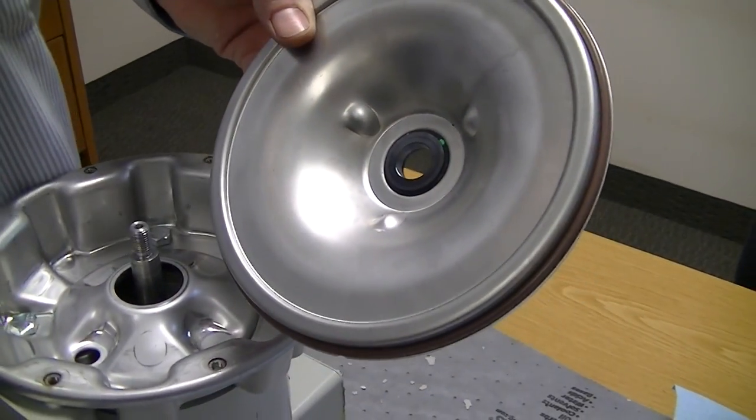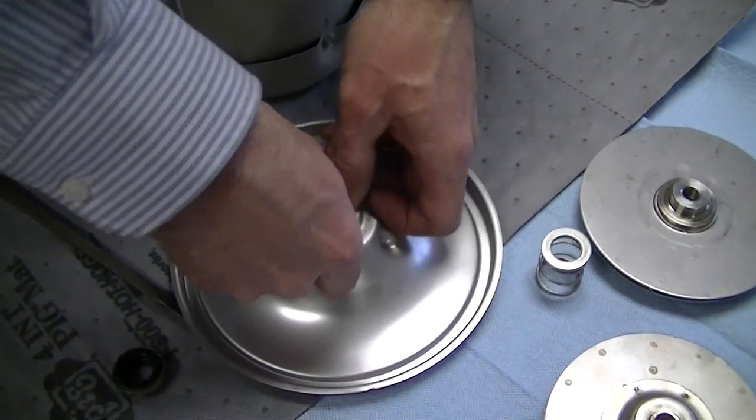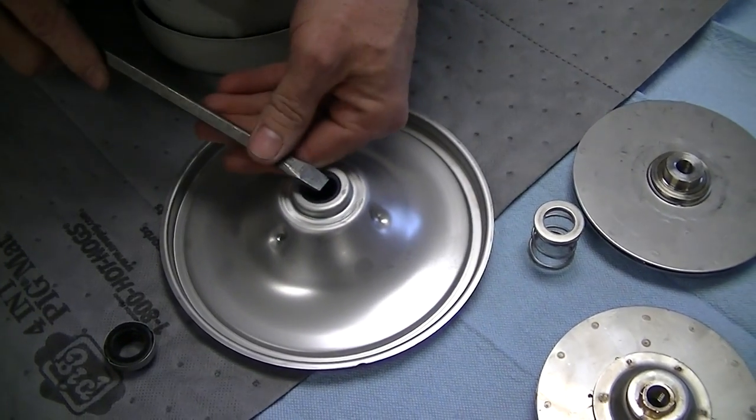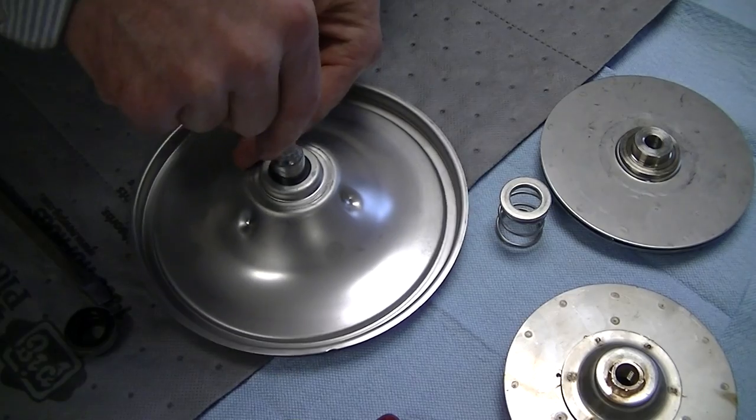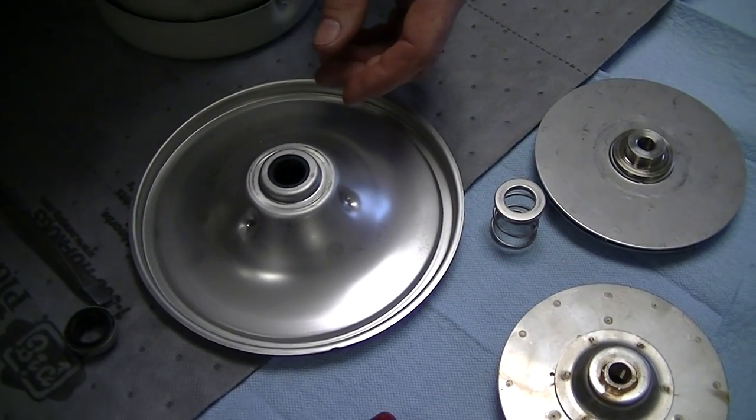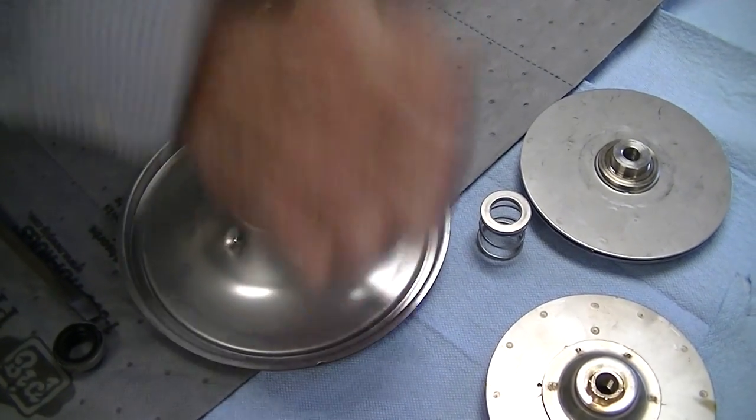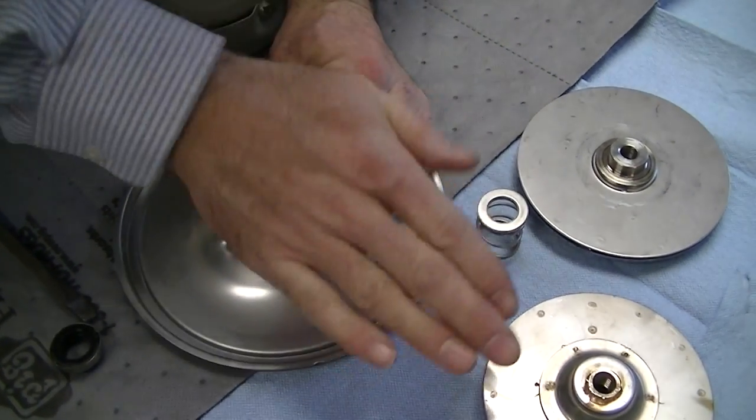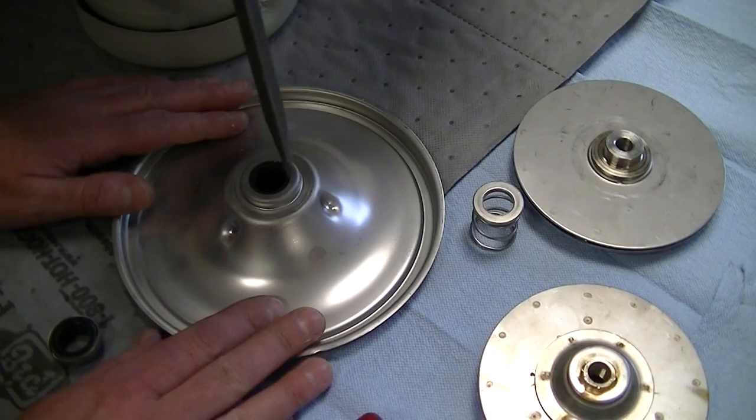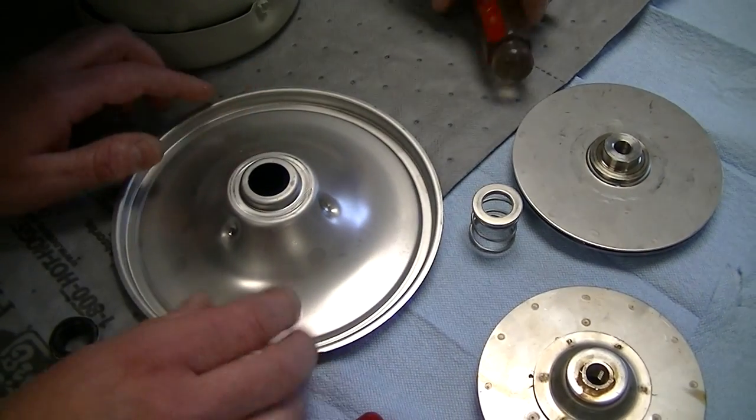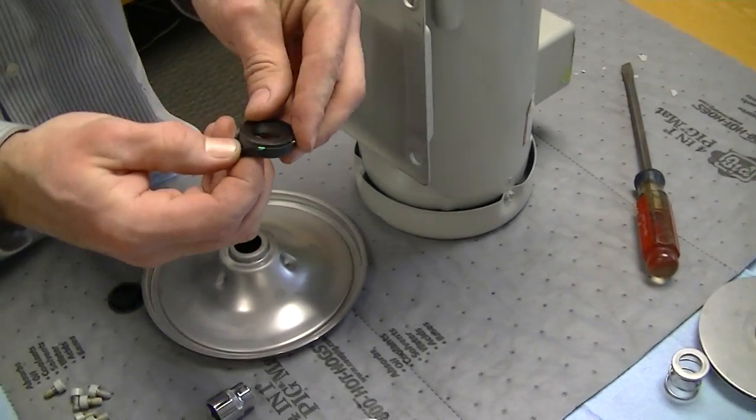Now to get this part out, you turn this over and you just simply push this out from the back side. Sometimes you can use the back of a socket like this right here. This won't fit. The back of this socket seems to fit, and you just push this out. Sometimes it's a little stubborn. There it goes. And this is your stationary seat right here.